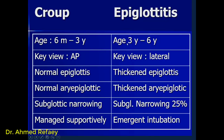The differences between croup and epiglottitis: Epiglottitis affects ages three to six years; croup affects six months to three years. The key view in epiglottitis is lateral; in croup it is frontal anteroposterior. In epiglottitis there is thickening of the epiglottis and aryepiglottic fold; in croup, these are normal. Subglottic narrowing occurs in 25% of epiglottitis cases but in 100% of croup cases. Treatment of epiglottitis is emergent intubation; croup is treated conservatively.